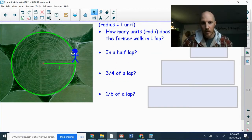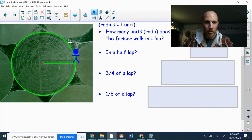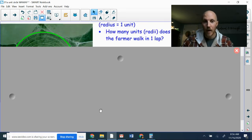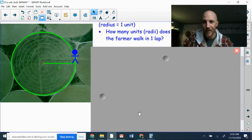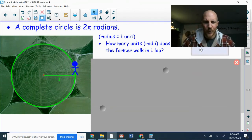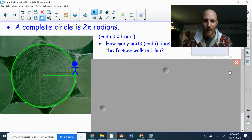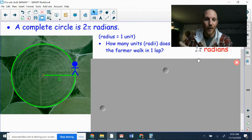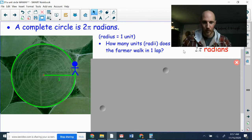So if the farmer here is to walk all the way around the circle, his circular farm, goes all the way around and ends up back exactly where he started, how many radians did he walk? How many radius lengths did he walk in one lap? Well, we already said that, right? It is 2π radians. 2π radians makes up one complete circle.